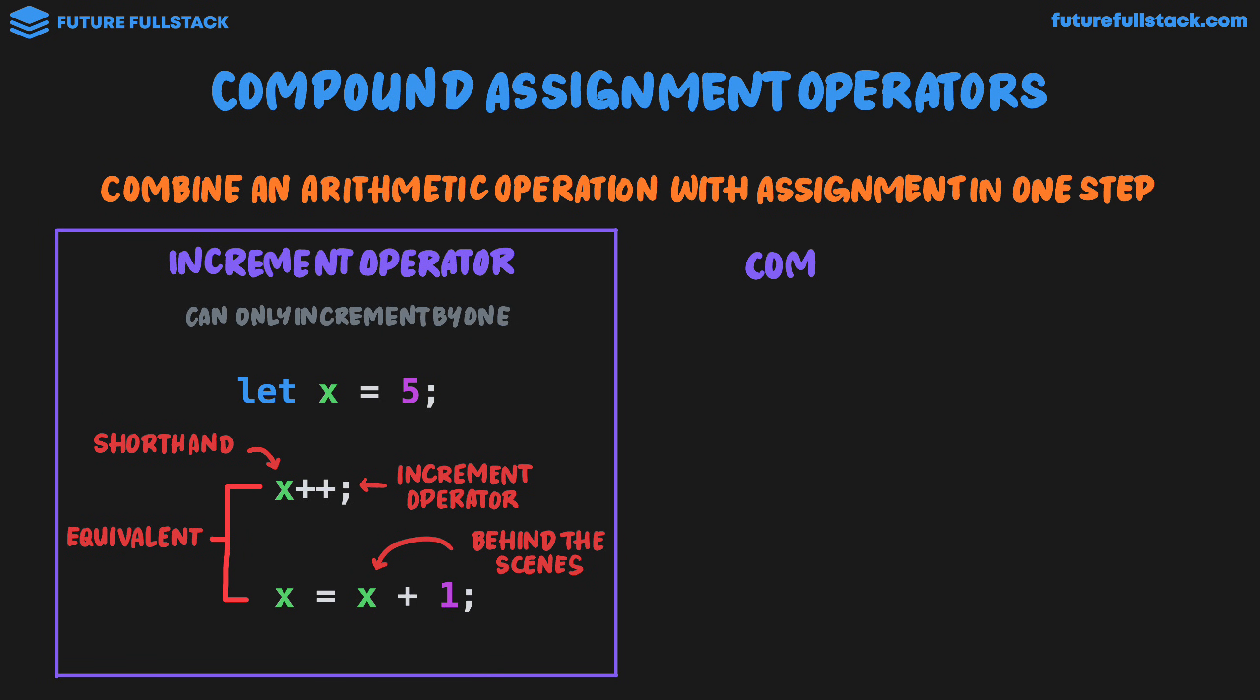So let's now take a look at compound assignment. This is when we can increment by any number. So again let's look at x equals 5. So now if we wanted to increment this by say the number 3 we wouldn't be able to use the increment operator, because that increments it by 1.